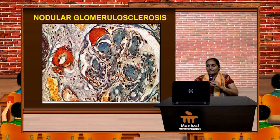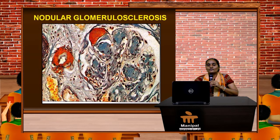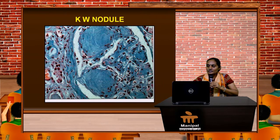At this stage the patient will be having a nephrotic range of proteinuria, and there will be a steady fall in the glomerular filtration rate, which will ultimately lead to elevation of serum creatinine and then bilaterally contracted kidneys with loss of corticomedullary differentiation.